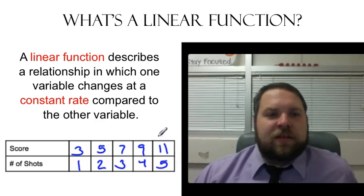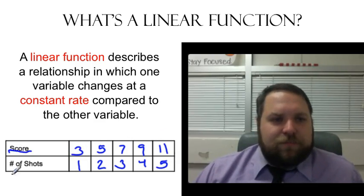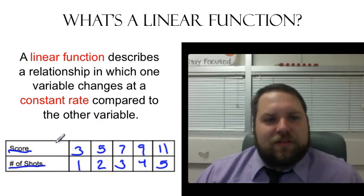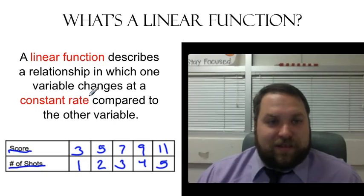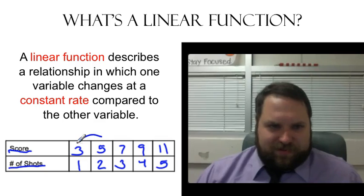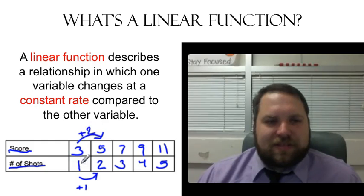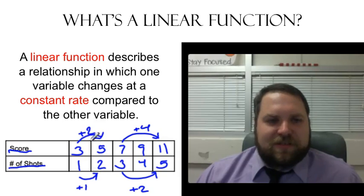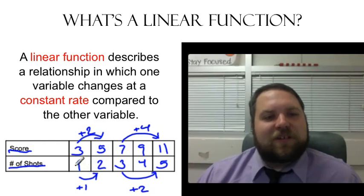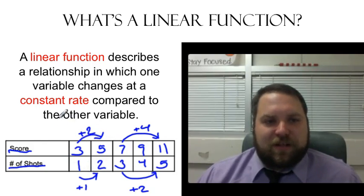This is all we mean by a linear function. I have two variables. I have the score and the number of shots that have gone in. And the relationship between them, or they are changing at a constant rate compared to the other one. So, for example, every time the number of shots increases by one, the score increases by two. And that pattern holds no matter which ones I look at. The score is always increasing by twice the number of shots. So, for instance, if I go from three to five, I added two right there. And from seven to eleven, I added four. So, the ratio of those is always constant. There's a constant rate of change each time one variable changes. The other changes by a corresponding amount called the rate of change.